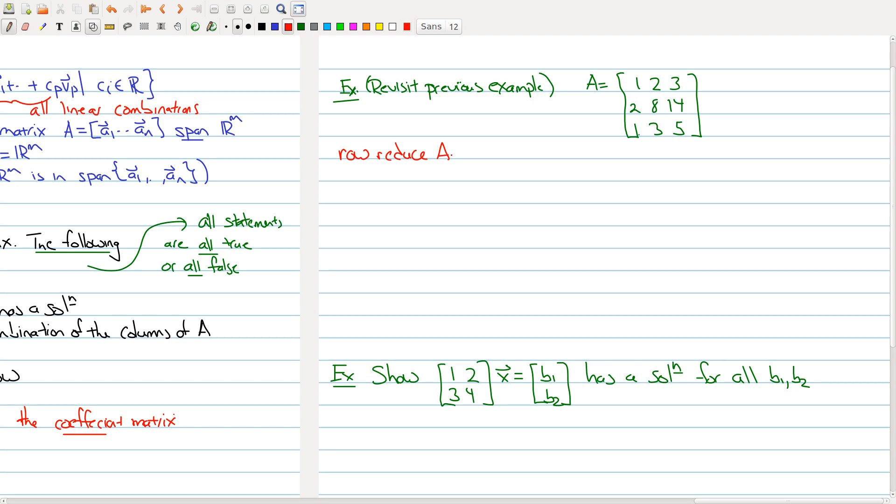Row reduce A. So if you row reduce A, I'll just skip the steps because you guys are becoming experts on it. If I were to row reduce this matrix, I would end up with [1, 2, 3; 0, 4, 8; 0, 0, 0]. So I end up with this matrix.